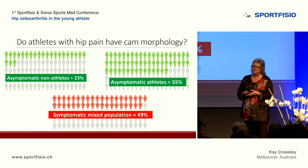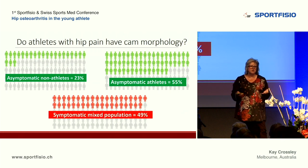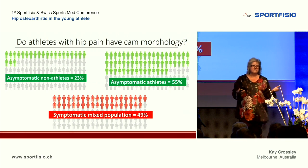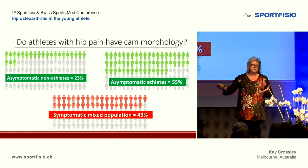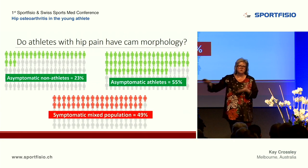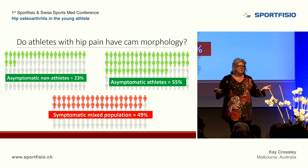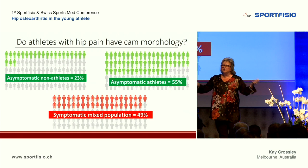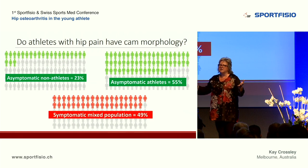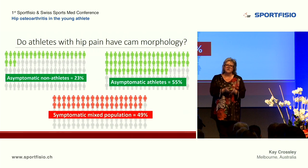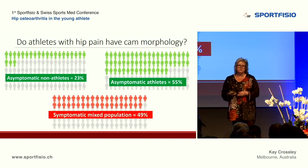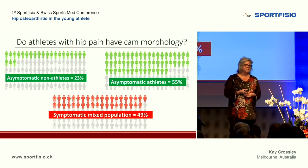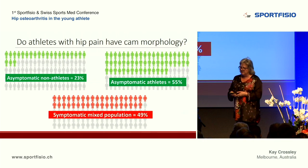This raises the question of whether CAM morphology is actually the cause of pain in those athletes, and we also don't know whether asymptomatic athletes with CAM morphology will go on to develop pain over time. These prevalence studies are cross-sectional — we x-ray or MRI hips at a given time — so we don't have enough information about the longitudinal effects. What we do know is that people with symptoms do not have a higher prevalence of CAM morphology than asymptomatic athletes.